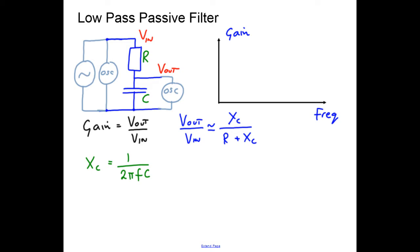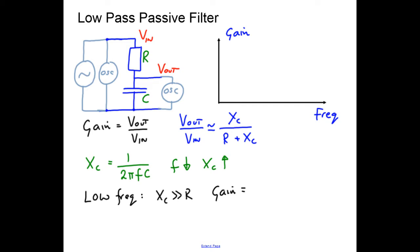There are two situations we're going to consider. The first situation is when we have a low frequency. For a low frequency, when the value of f is small, the reactance of the capacitor is very high — so Xc will be much greater than R. Our potential divider equation becomes: the gain is approximately equal to Xc divided by Xc, because the R, which is very very small, has very little effect. So this is approximately 1. At low frequencies, the gain is approximately 1 and doesn't really depend on the frequency.